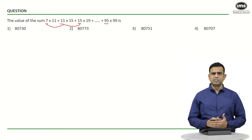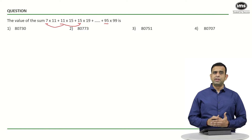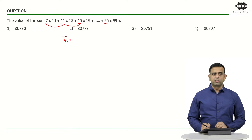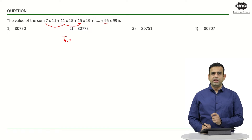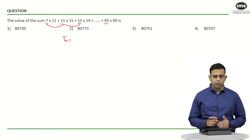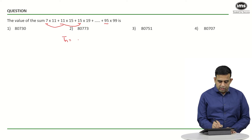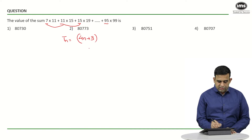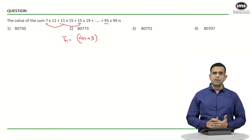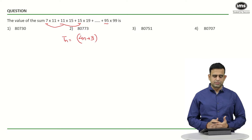The first thing is to find the nth term in terms of n. Focusing on the sequence 7, 11, 15 and so on, with common difference 4, the nth term comes out to be 4n + 3. If you put n=1 you get 7, and if you put n=2 you get 11, and so on.